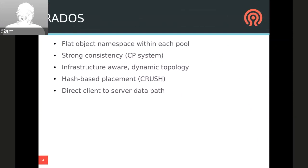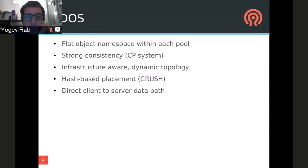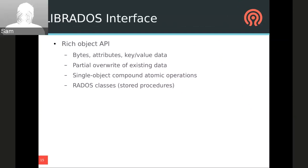The RADOS interface tries to make it simple to reason about accessing distributed storage. Objects are divided into flat namespace pools. Each pool can have different placement rules, allowing the user, for example, to place some objects exclusively on fast SSD OSDs or slow spinning disk OSDs within the same cluster. Applications written against RADOS can rely on the relative simplicity of CP-style consistency. Users can write applications for RADOS using the librados interface available for C, C++, Python, and several other languages.